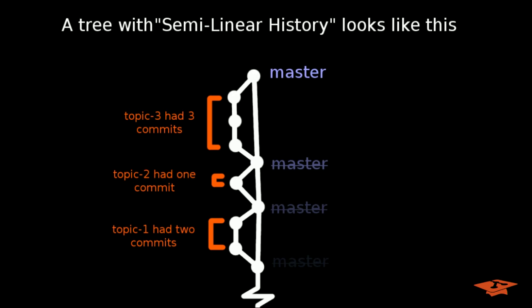So if you choose the semi-linear history setting, your tree of commits is actually going to end up looking like this. Now I've pointed out here where master used to be and where master is right now. In this example, topic 1 had 2 commits, topic 2 had 1 commit, and topic 3 had 3 commits.